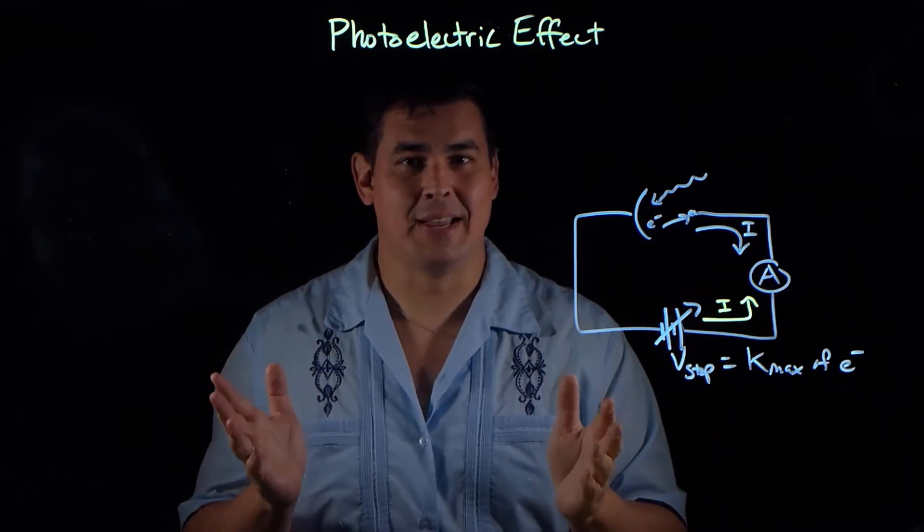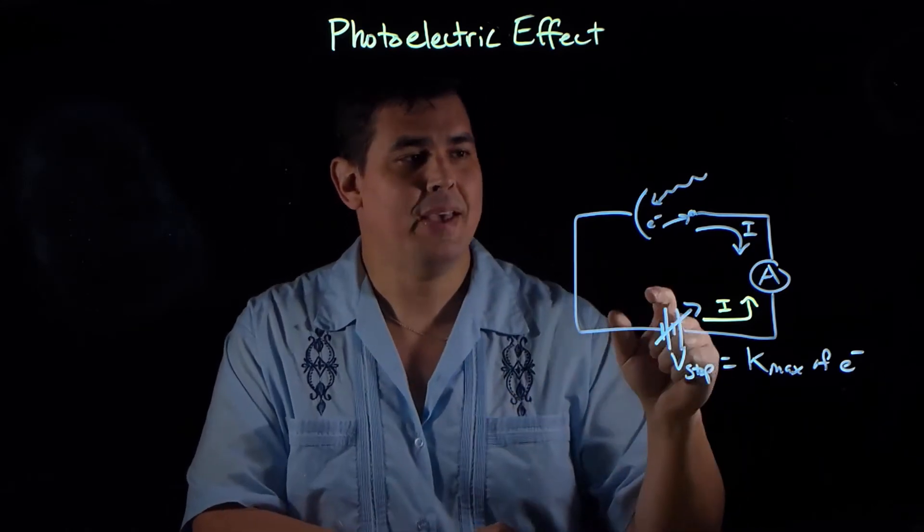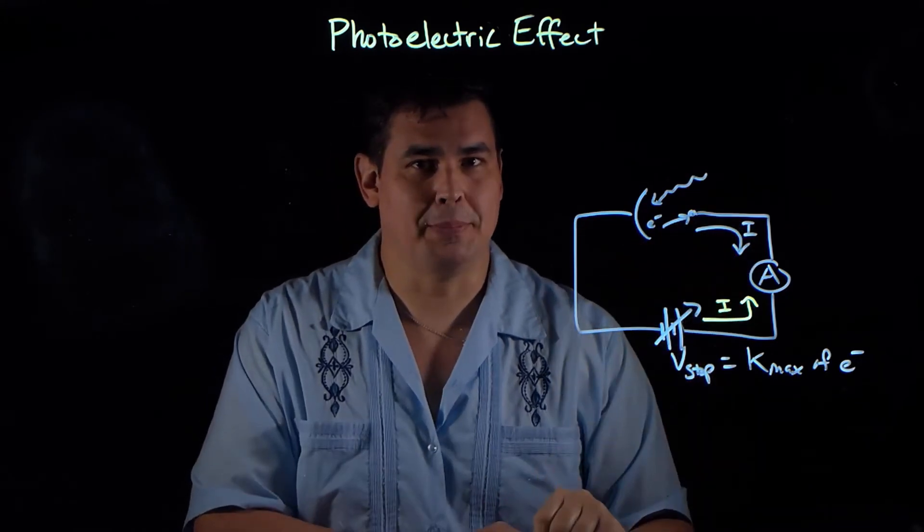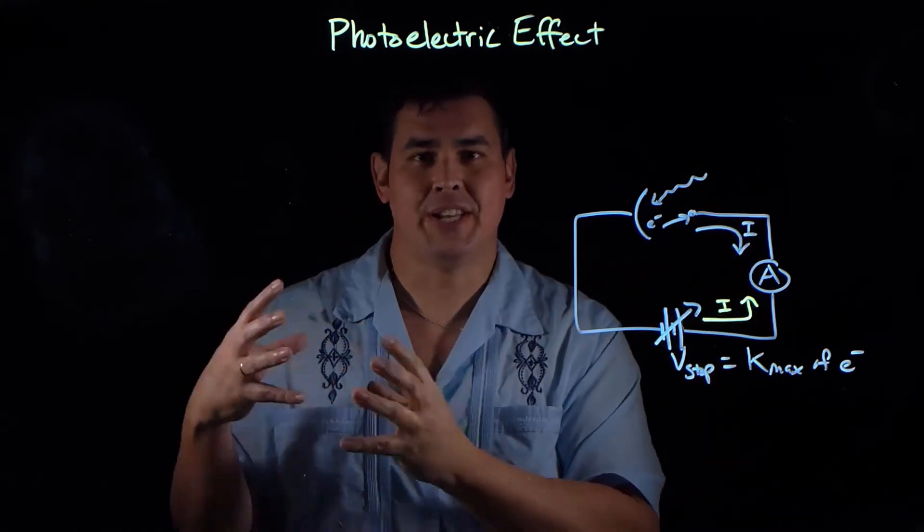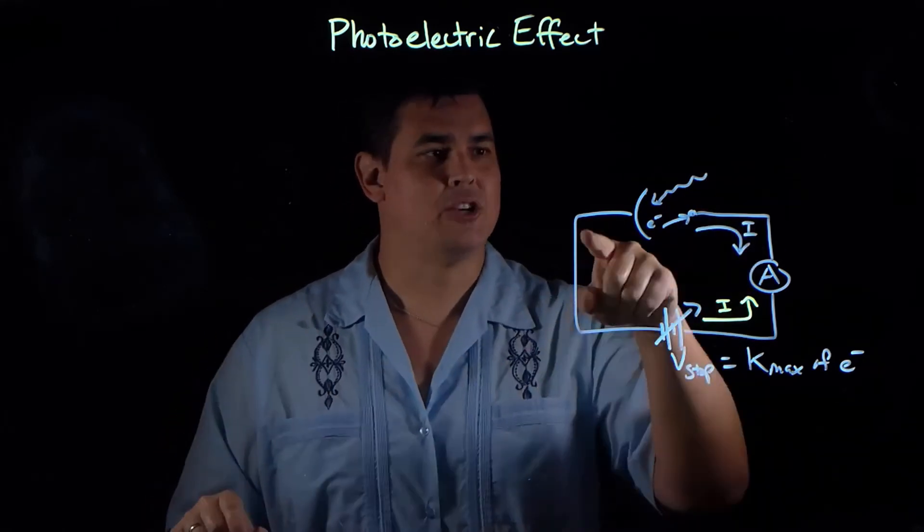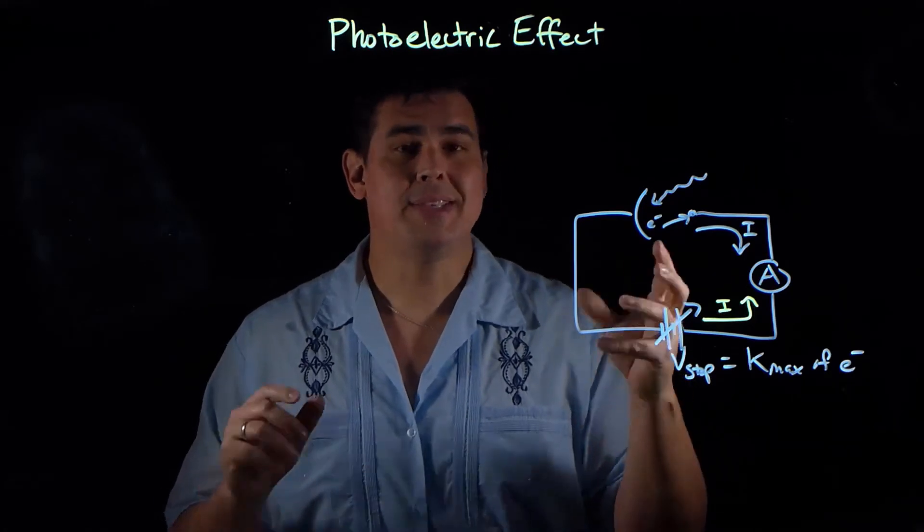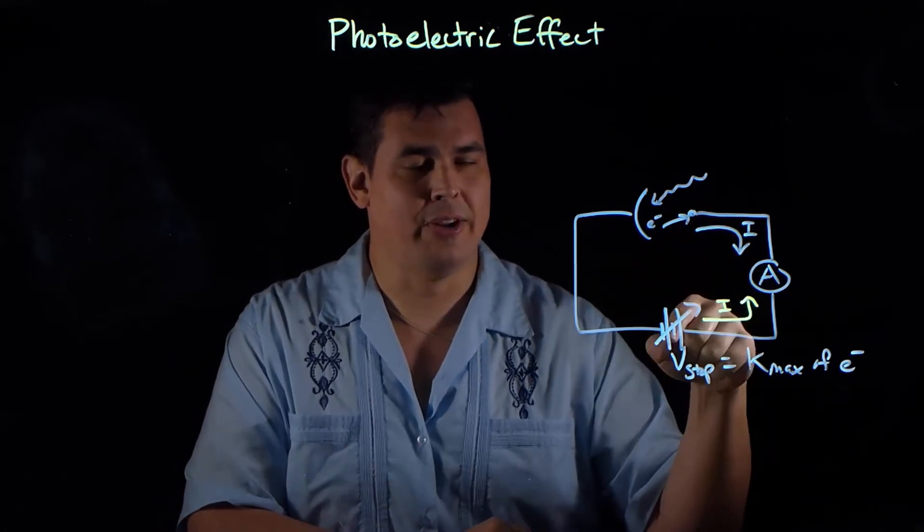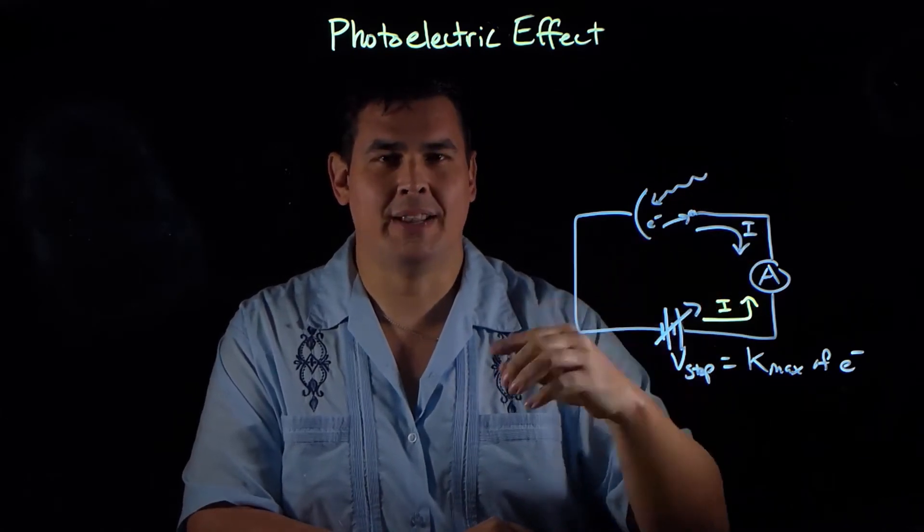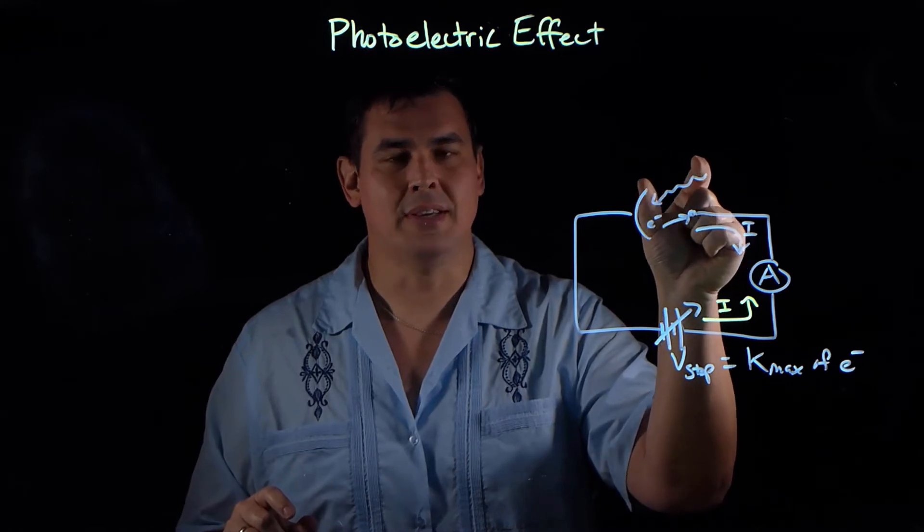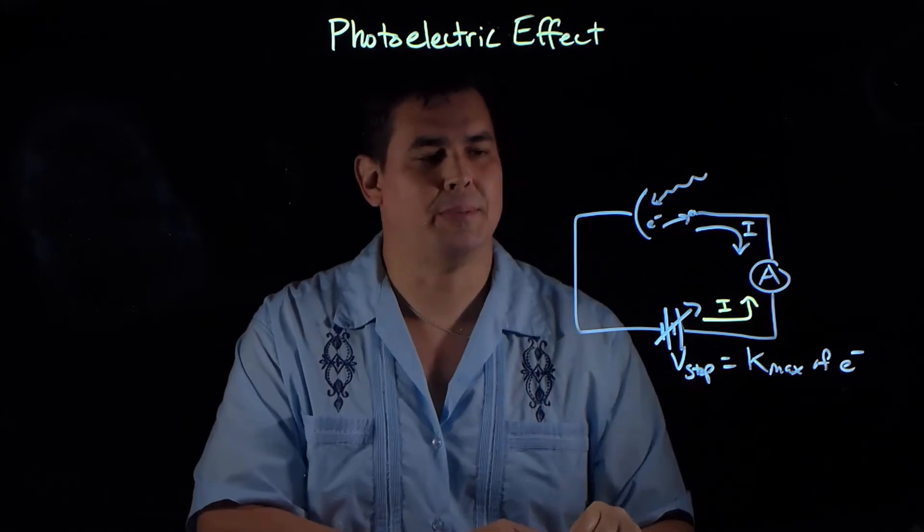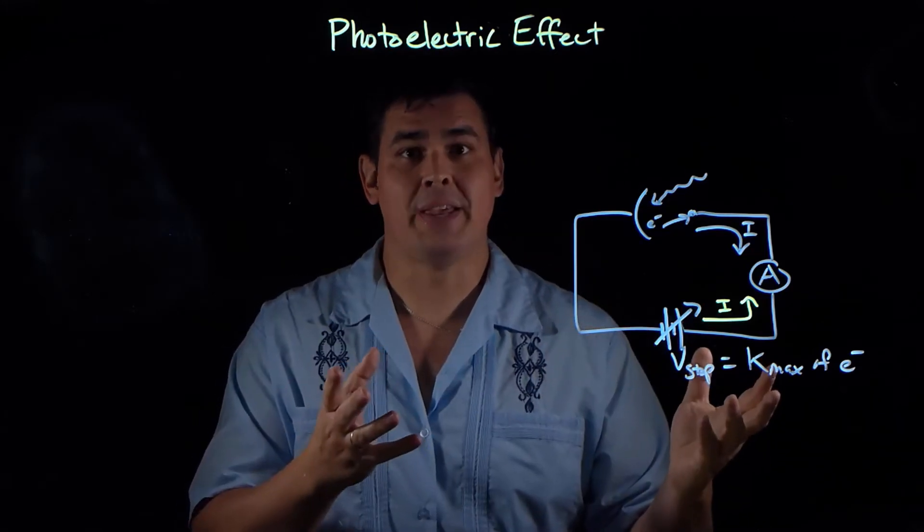So the best hypothesis at the time was called the triggering hypothesis, put forth by Lenard. And basically it said that the light, all it was doing was triggering the electron to jump. The electron already had the energy inherent in it just from being in the atom, and that light just came in and it kind of gave it a push and triggered it to jump, kind of like setting off a mousetrap. And so his explanation for the frequency mattering was, he said that this light has a frequency and that it matched the frequency of that electron in the atom. And so only these certain frequency waves would come in and they had to match up with a specific electron and that would free that electron. And so that's how they explained it for a long time.